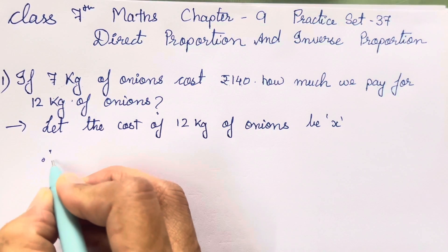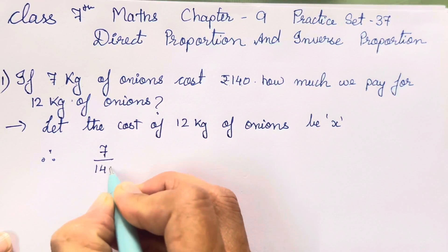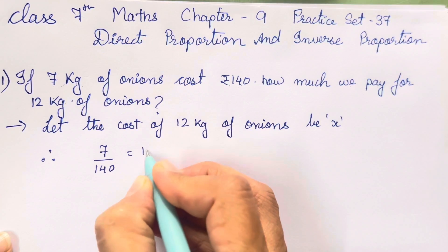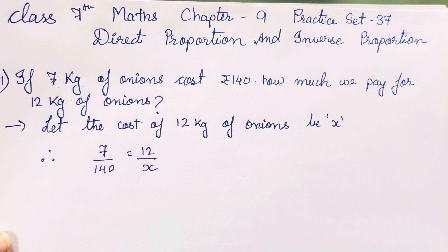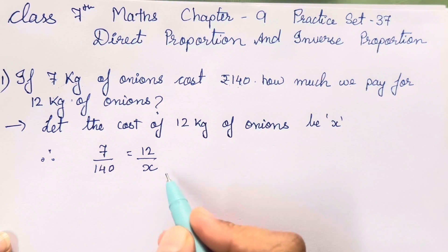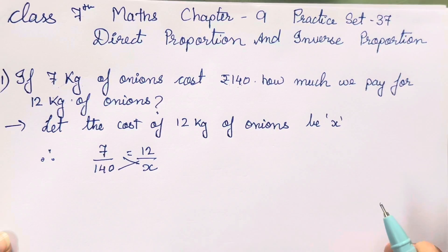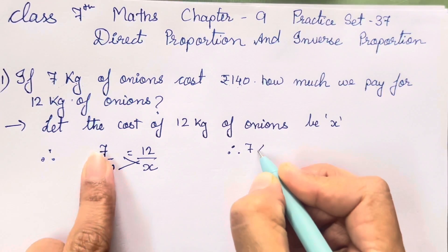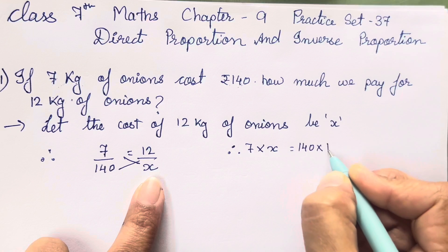Now, how are you going to arrange it? So: 7 kgs — 140 rupees, and 12 kgs — x rupees, because we have taken x for 12 kgs. Now what we have to do is cross multiply it. Cross multiplication is done in this way: 7 into x and 140 into 12.